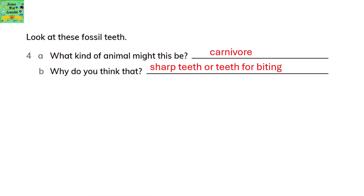Look at these fossil teeth. What kind of animal might this be? It could be a carnivore — we don't know exactly which one, but a carnivore; maybe a lion or a tiger. Why do you think that? Sharp teeth, or teeth for biting. Since they have very sharp teeth, it is a carnivore.